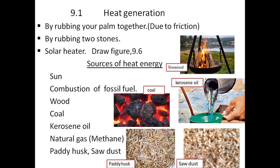Section 9.1 is about heat generation. How do we generate heat? The first example: if you rub your palms together, due to friction you can generate heat. If you rub two stones together, you can also generate heat. Solar heaters also produce heat.